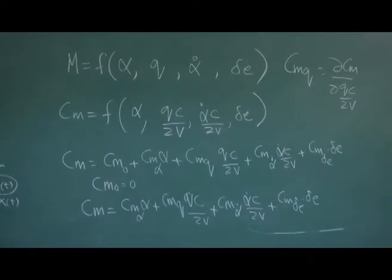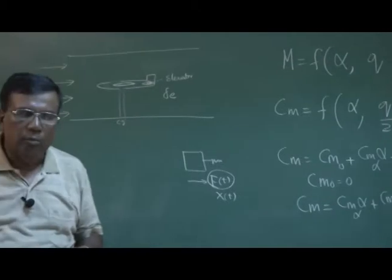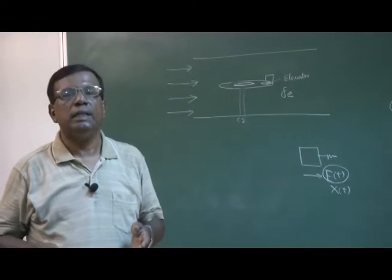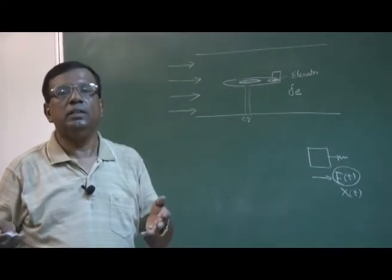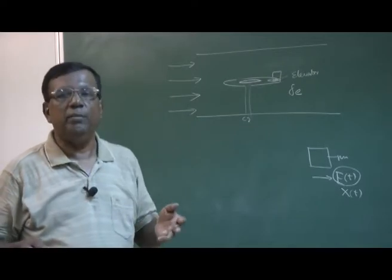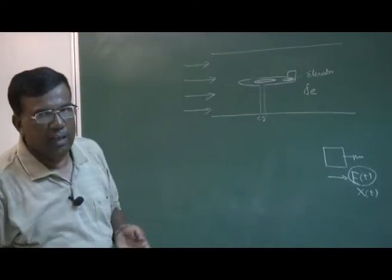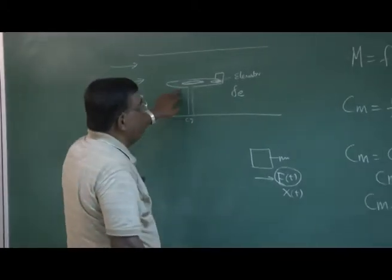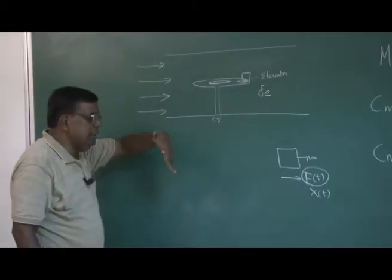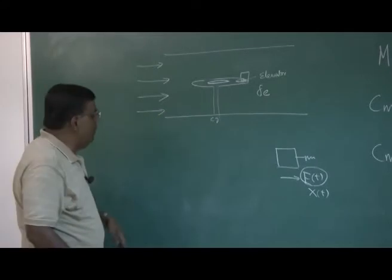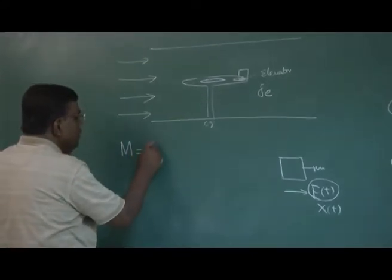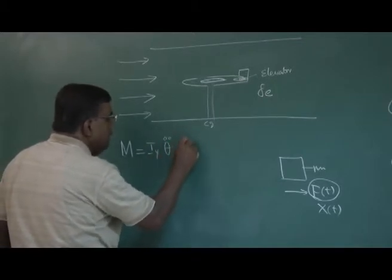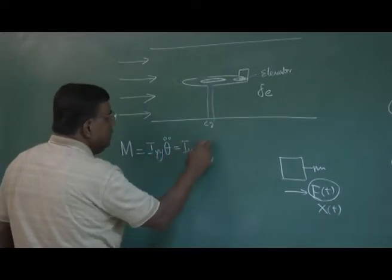When we were doing the mass-spring-damper system, our first step was to write the equation of motion — that is how we wrote x-double-dot plus (C/m)*x-dot plus (k/m)*x = f(t)/m. But here also you have to write the equation of motion, and we understand this is now angular motion.